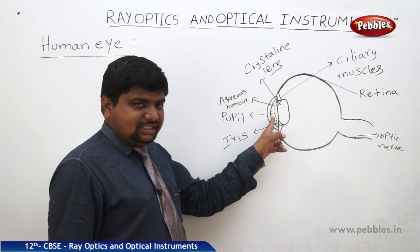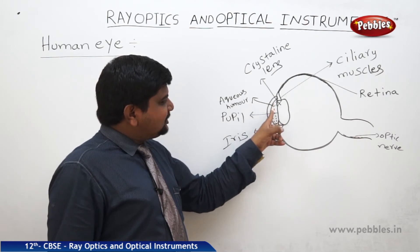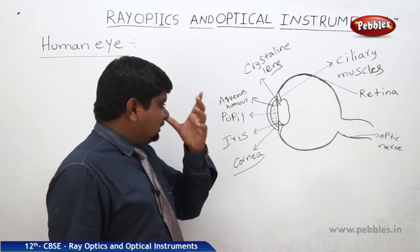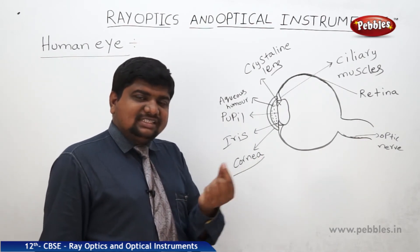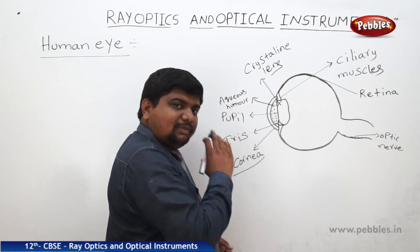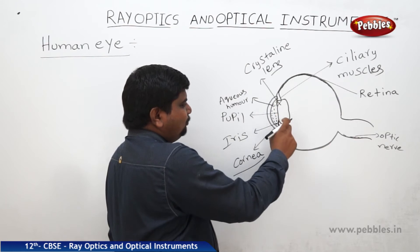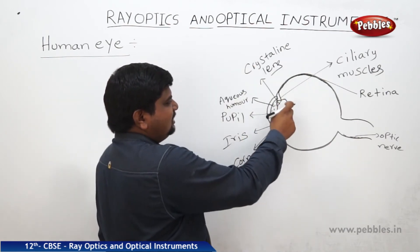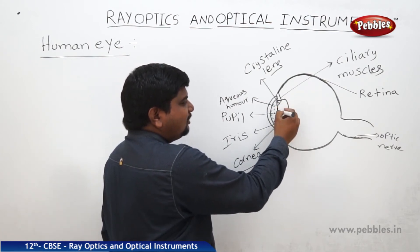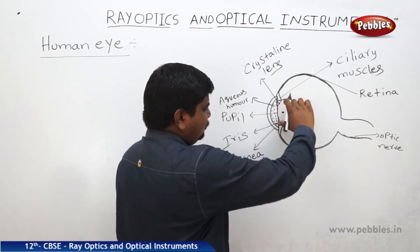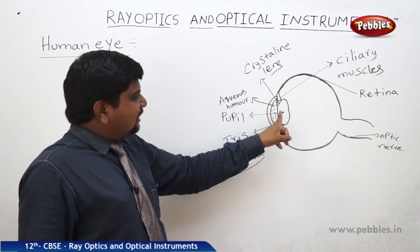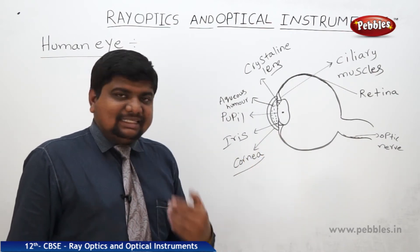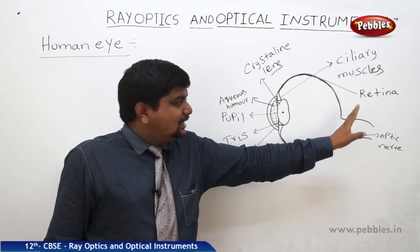Just behind the cornea, there is aqueous humor — water droplets that can bend the light again. The light then passes through the pupil. The central part of the crystalline lens is called the pupil. The pupil does not have any cones or rods to absorb light, so light can pass through it without any reflection or refraction, which is why the pupil appears dark.